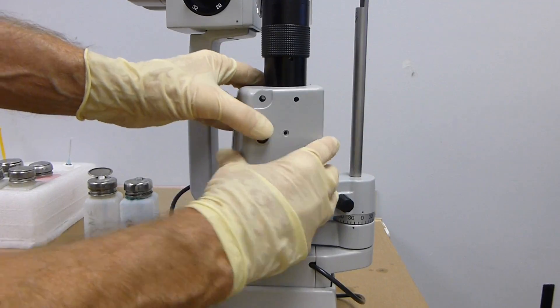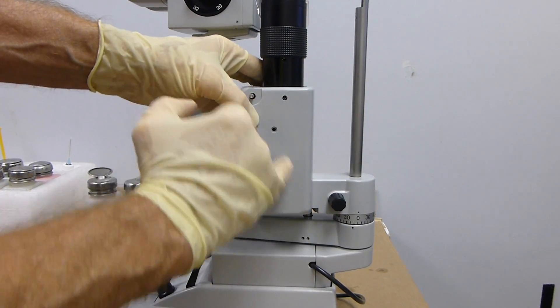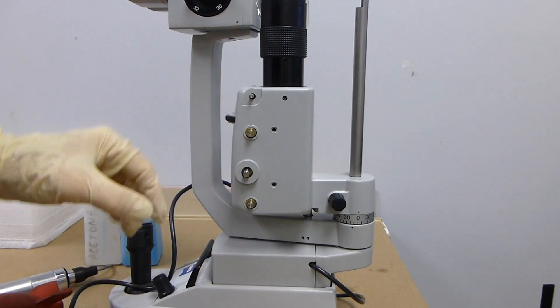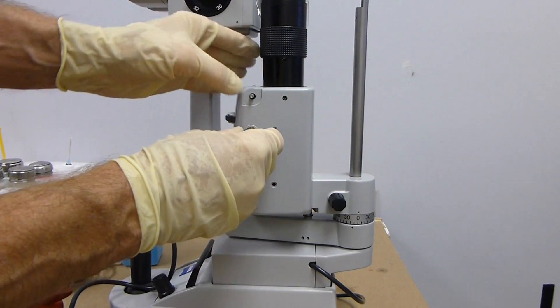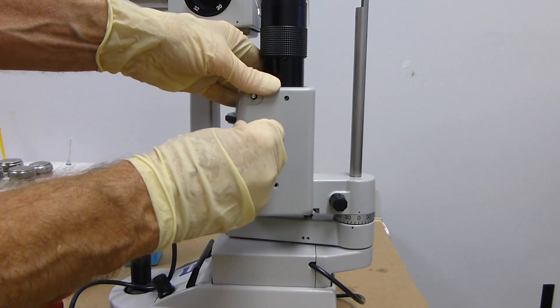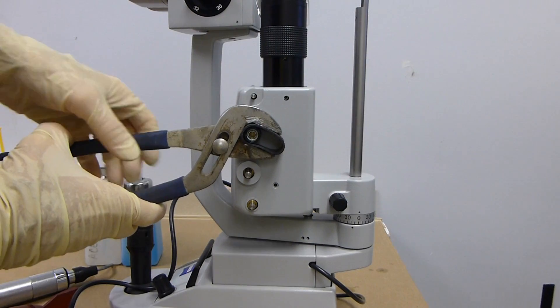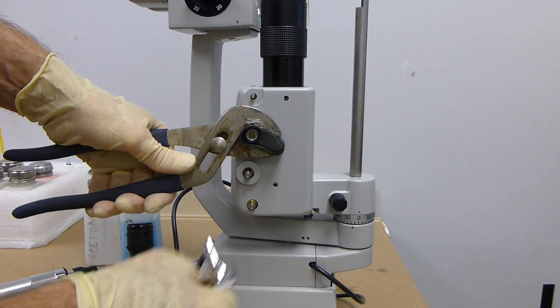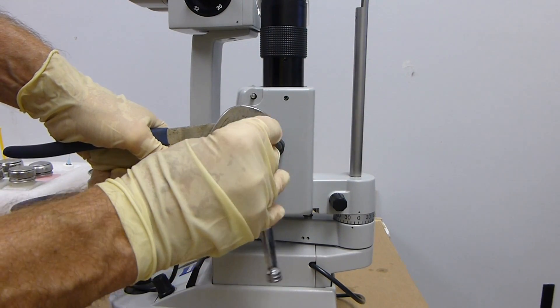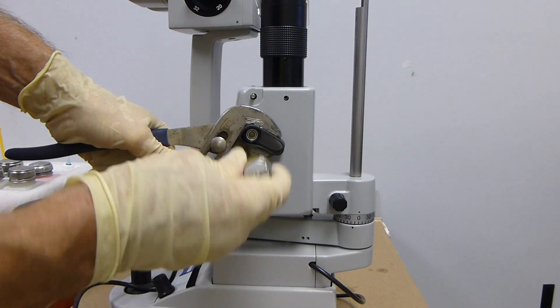Put it back together. Put your cover on, put your Allens in, and then put your knobs on. Just like you took them off, you have to hold them while you tighten the nut inside.